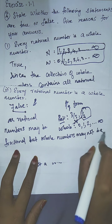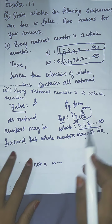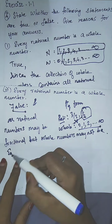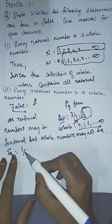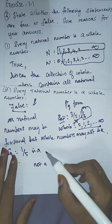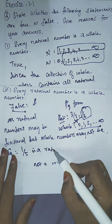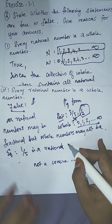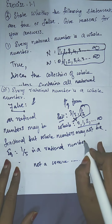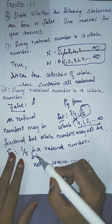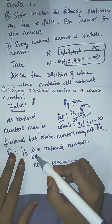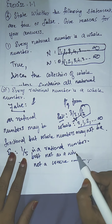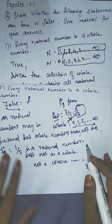For example, 1/5 is a rational number but not a whole number. That's it.